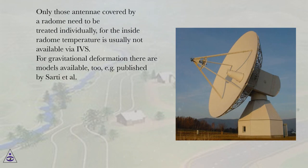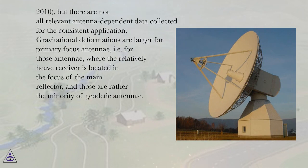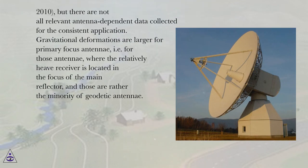Only those antennae covered by a radome need to be treated individually, as the inside radome temperature is usually not available via IVS. For gravitational deformation there are models available too — for example published by Sardi et al. (2010) — but not all relevant antenna-dependent data have been collected for consistent application. Gravitational deformations are larger for primary focus antennae, i.e. for those antennae where the relatively heavy receiver is located in the focus of the main reflector, and those are rather the minority of geodetic antennae.